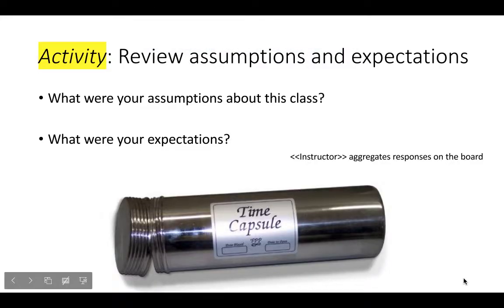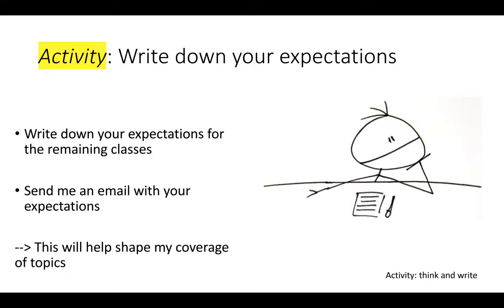Welcome to a lecture on graphs in UMBC's Data 601. My name is Ben. To get started, I want you to review the expectations that you wrote down at the initial classes in this lecture. You wrote down what it is that you thought you wanted to get out of this class and what you thought we were going to do. I want you to revisit those and think about whether those have been met and what you would want to get out of the rest of the semester.